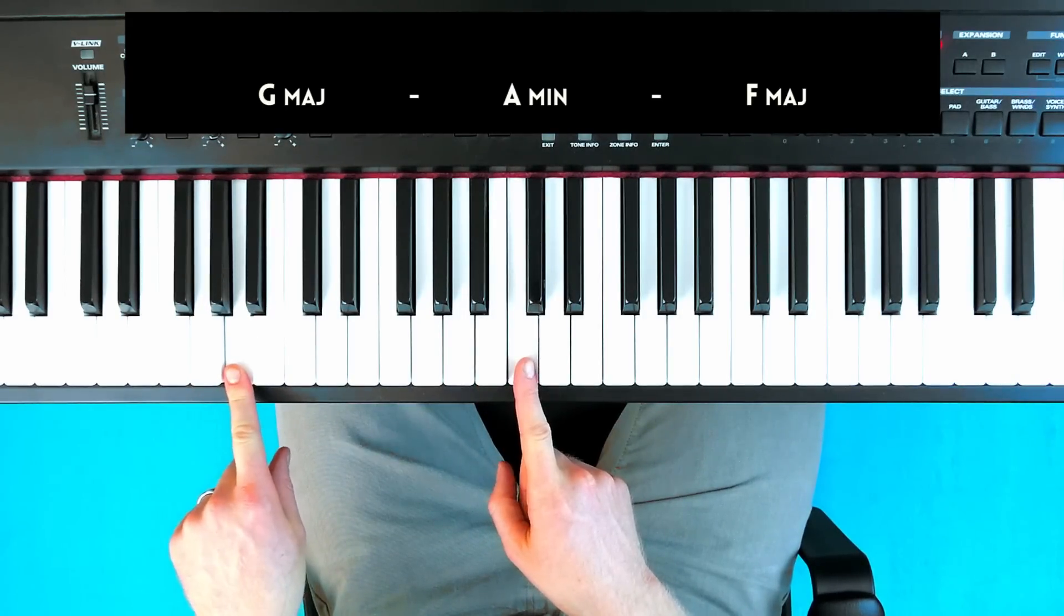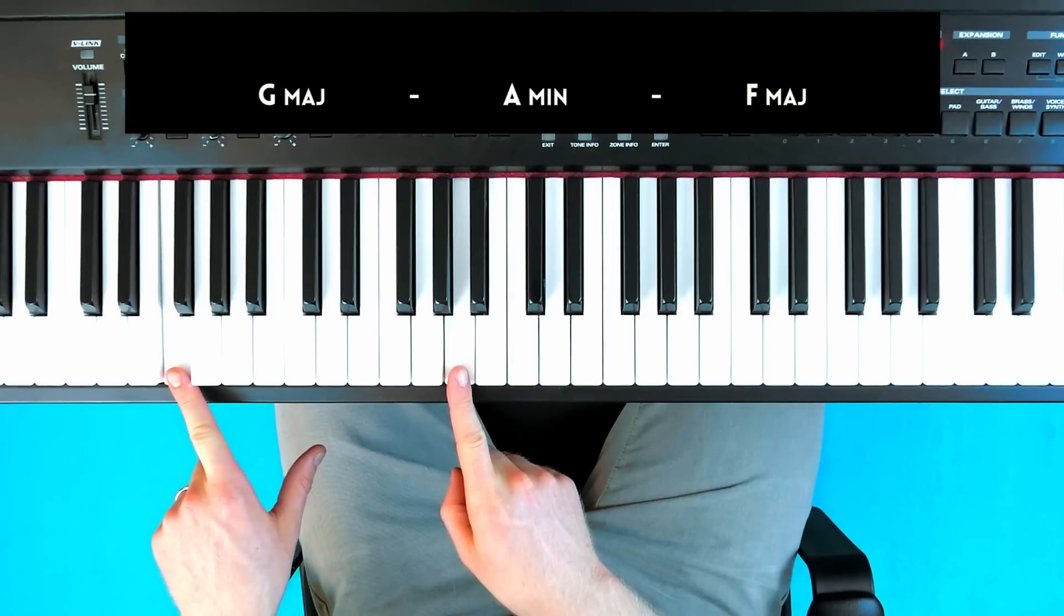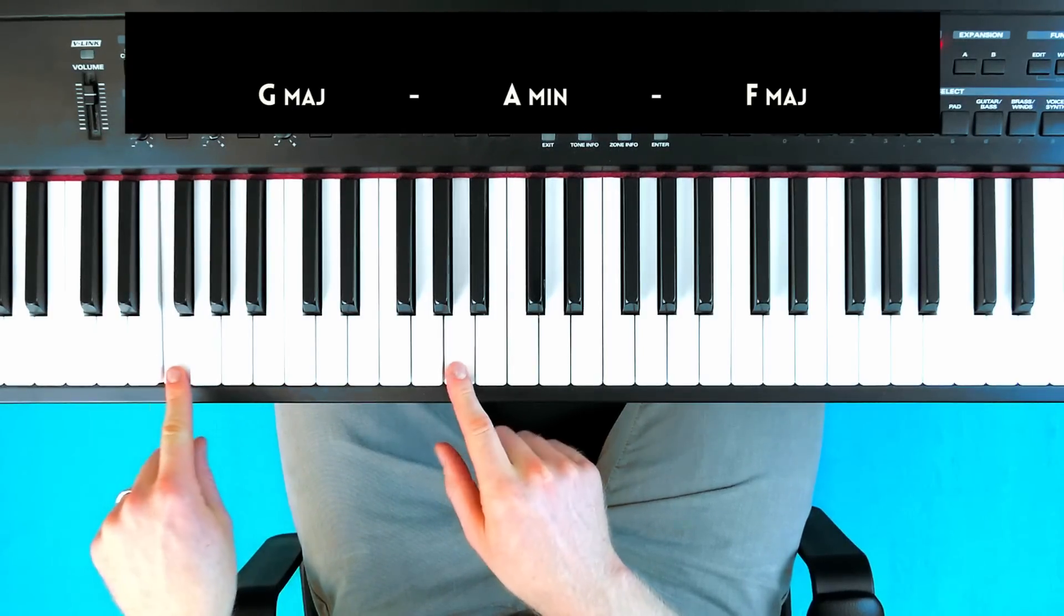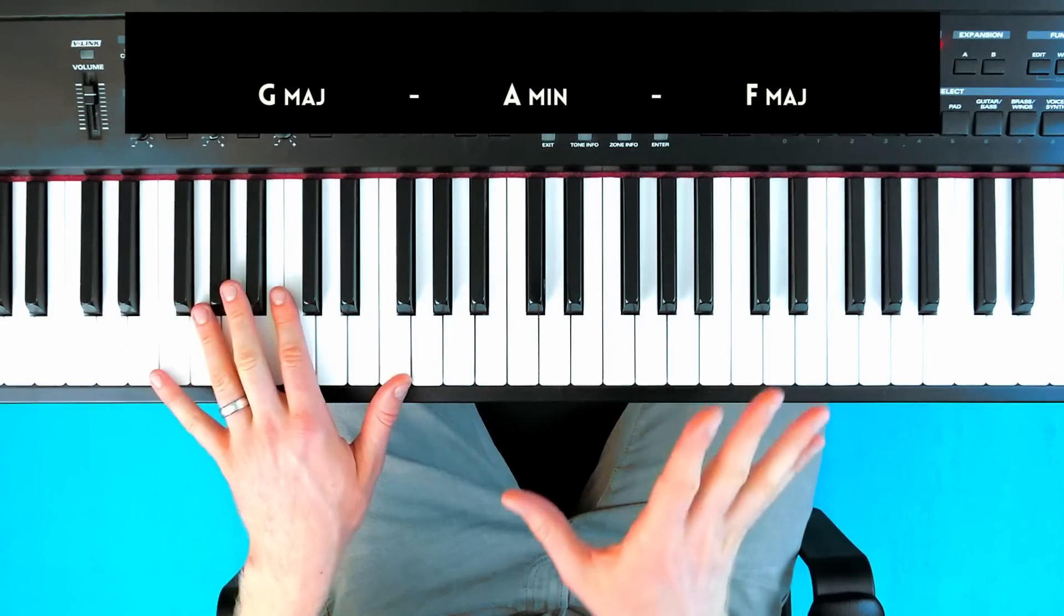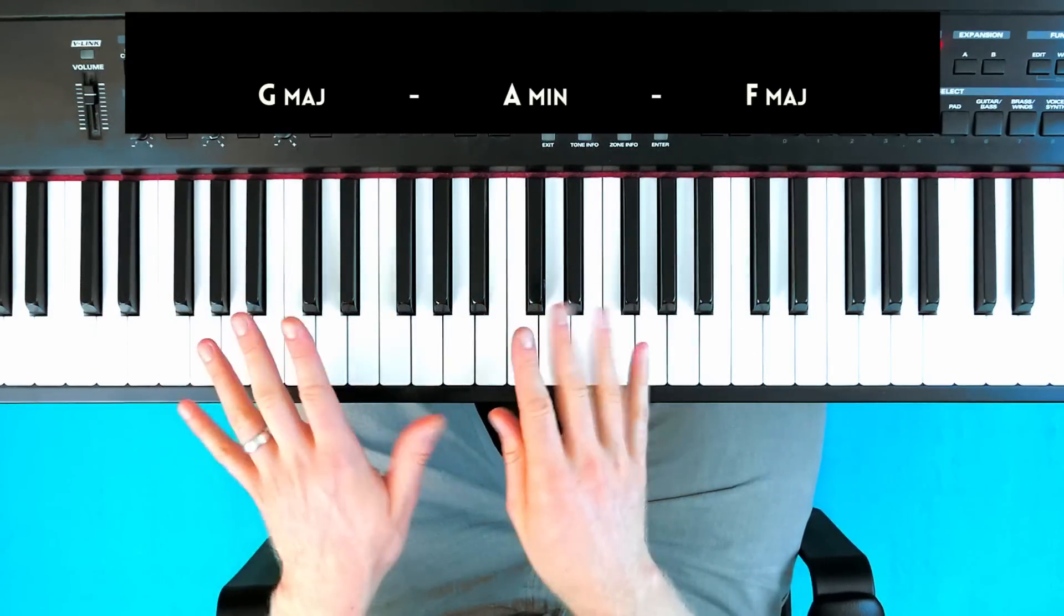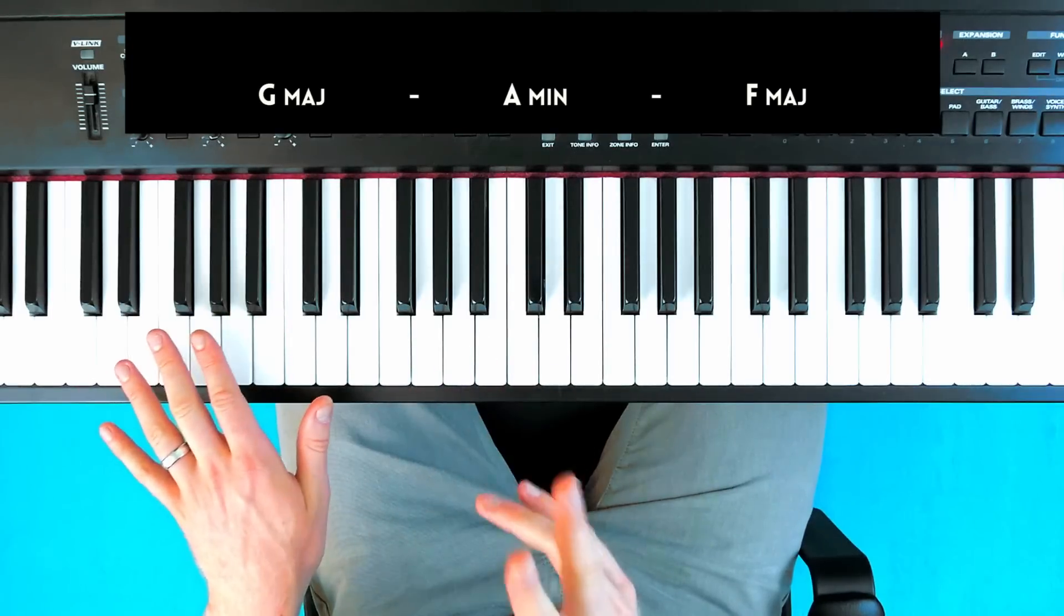A minor looks like this: root and third. And F major, it's pretty much root and third. Now I do arpeggiate and create a simple melody in the right hand, just using mostly chordal tones of these three chords.